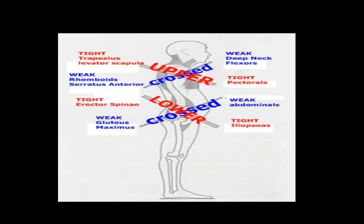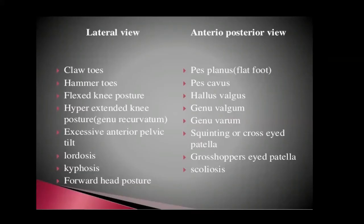As you can see, these are the upper cross syndrome and lower cross syndrome, as I have spoken previously. In the diagram, muscles shown in red are the ones going to become tight, and muscles shown in blue are the ones in a criss-cross pattern that are going to become weak. This is how the person is going to develop problems at the neck region as well as in the lumbar region.